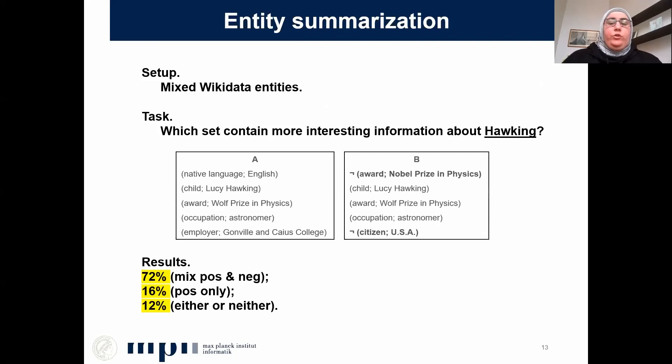We discuss the entity summarization use case in detail. We chose Wikidata as our knowledge base and 100 entities from a variety of types. We asked every annotator to choose the better set of facts about a given entity — which set is more interesting to them. One set contained all positive statements about the entity, and the other was a mix of positive and the top salient negative statements. Results show that annotators on average preferred the mixed set almost four times more than the positive-only set.